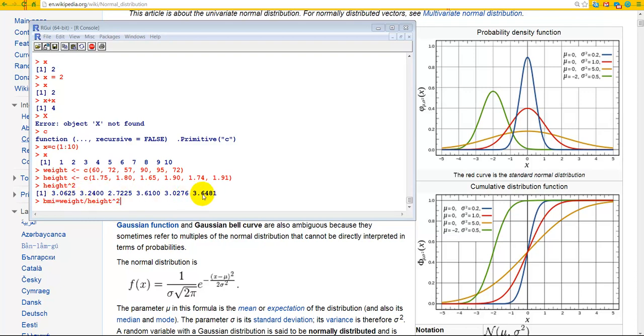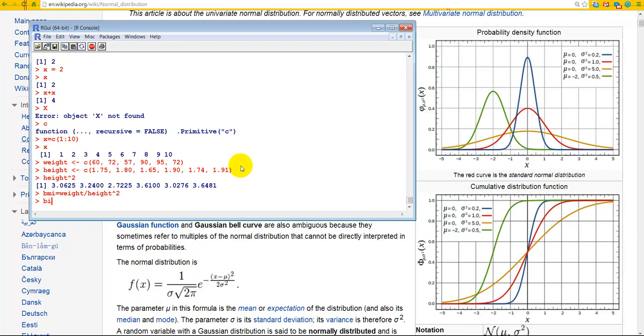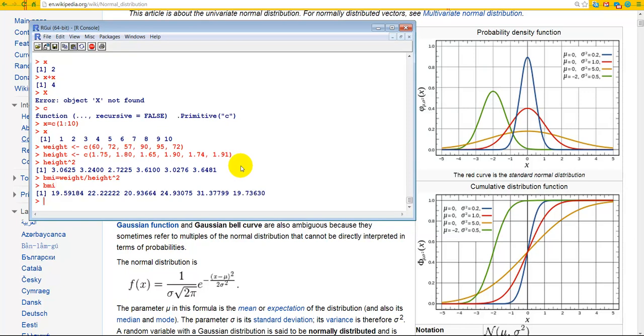Okay, and then we're going to have this vector, which is the height squared vector, which is here. And then we're going to have weight, so that's this vector. And we're going to divide this number by this number, 72 by this number. So that's what I mean by element-wise, 57 by this number, and so on. So let's try it. And then find out what it is, like that. So this is the BMI index, so-called BMI index, for these people.